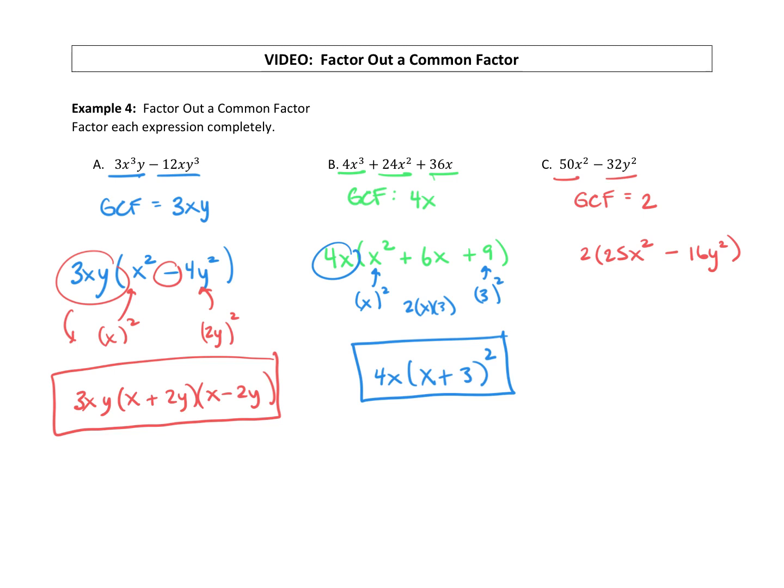Can we do any more factoring? Well, inside the parentheses we have two terms. When it's two terms, look to see if you might have that difference of squares. Are we squaring anything to get a 25x squared? Yep, that's a 5x times 5x.